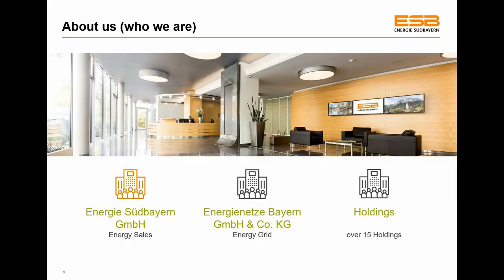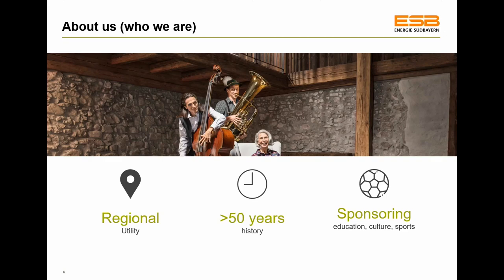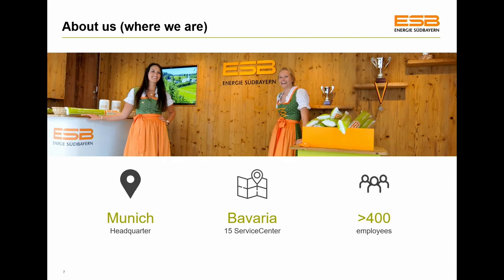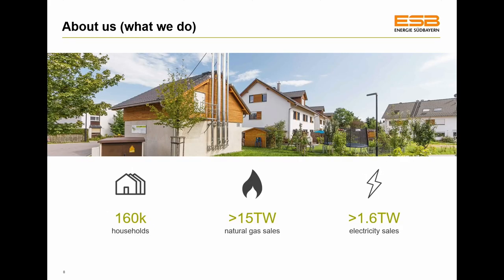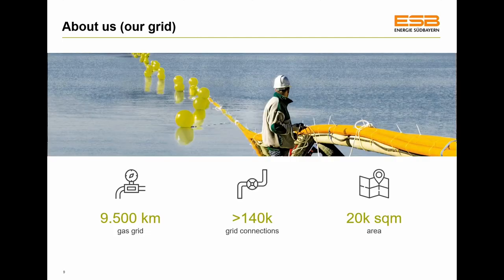ESB is an energy company located in Munich, running the energy grid in the south area of Bavaria, specializing in gas and electricity. They've been at the market over 50 years, sponsoring education, sports, and cultural activities in the south Bavarian area. Over 400 employees run grid topics and maintenance. They bring energy to over 160,000 households, selling over 15 terawatt of gas and 1.6 terawatt of electricity, with an energy grid spanning over 9,500 kilometers, all maintained through SAP.